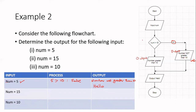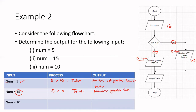Now let's look at num equals 15. We have a value of 15 for num. Is 15 greater than 10? That is true. So follow the branch that takes you to true, and it's going to output 'number greater than 10'. From that point it then goes to the next box and prints hello, and finally goes to the end — your stop.